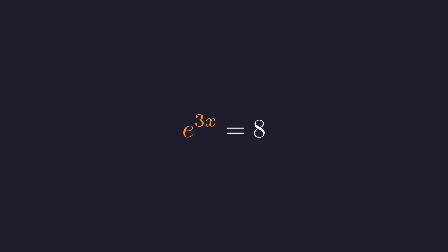To solve for x, we need to undo this exponential. The tool for that is the natural logarithm, taking the natural log of both sides. And since the natural log and the exponential function are inverses, they cancel, leaving us with 3x equals the natural log of 8.